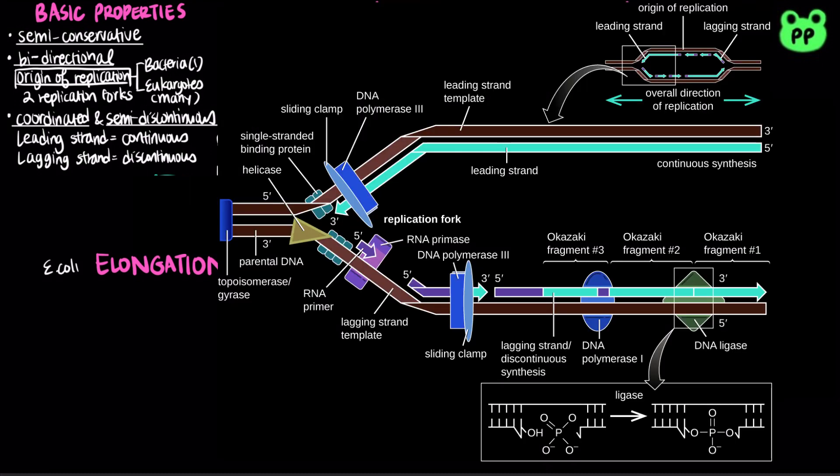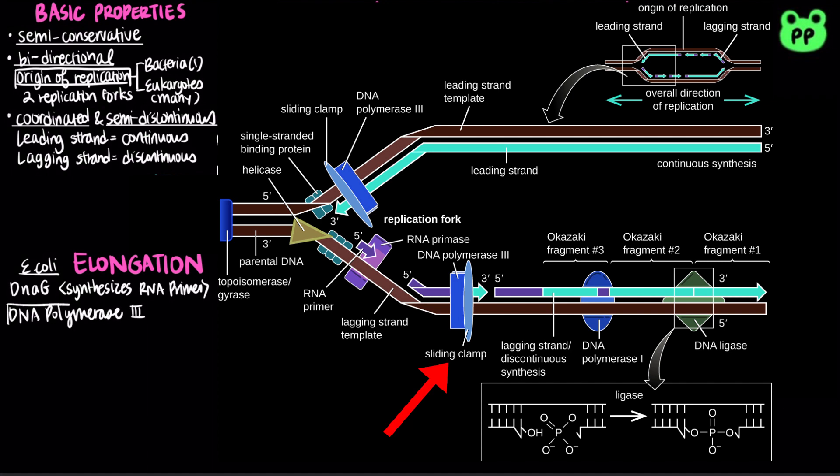In bacteria, the protein DnaG associates with DNA helicase and synthesizes RNA primers. The primary DNA polymerase in bacterial replication is DNA polymerase 3, which contains 13 subunits.